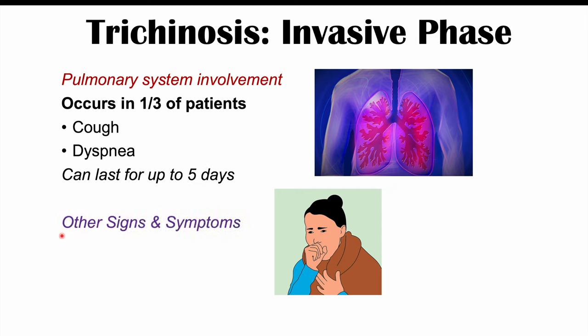Another blood marker that can be used is immunoglobulin E, which is also increased in cases of trichinosis. Much of the diagnosis is made by looking at the patient's history — seeing that they've eaten contaminated pork products, have the relevant signs and symptoms, and doing blood work to look for these elevations.